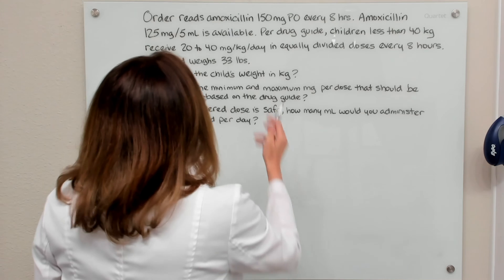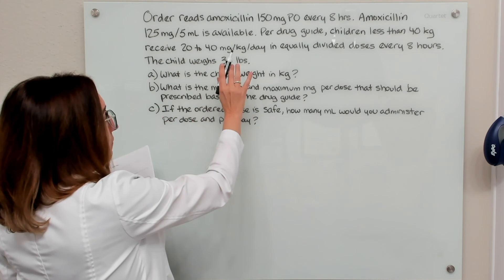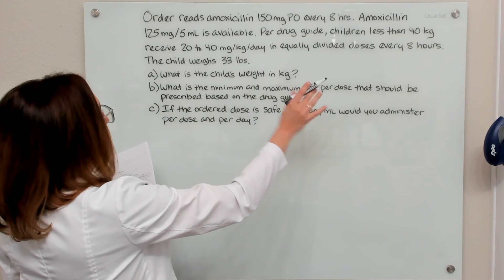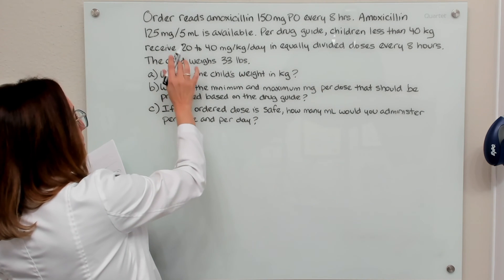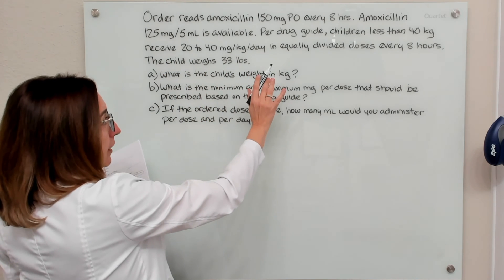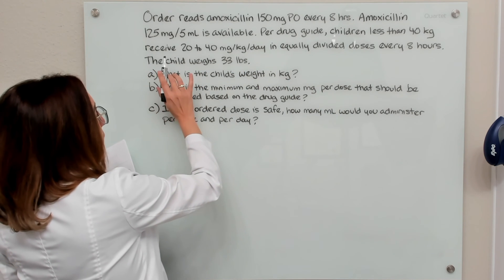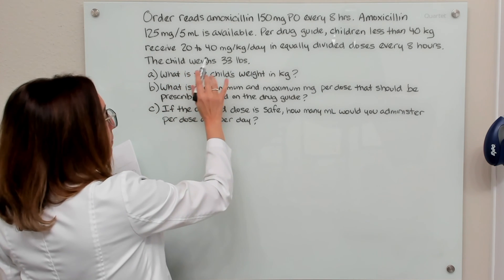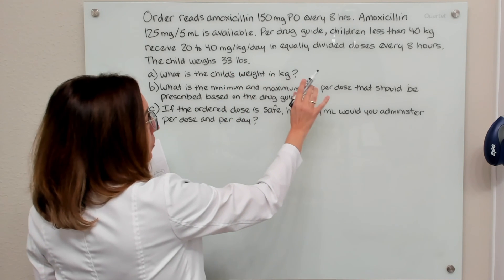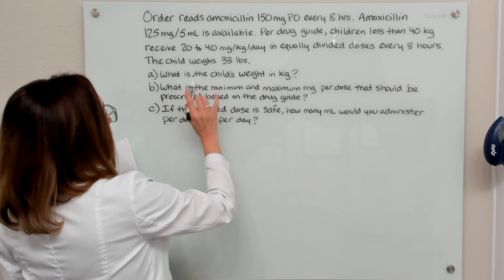In this particular problem, we have an order for amoxicillin 150 milligrams PO every eight hours. Amoxicillin 125 milligrams in 5 mLs of solution is available. Per the drug guide, children less than 40 kilograms receive between 20 to 40 milligrams per kilogram per day in equally divided doses every eight hours. Our child weighs 33 pounds.